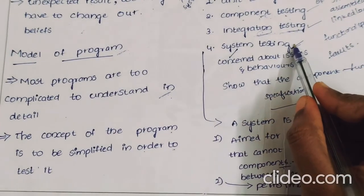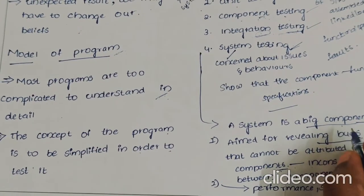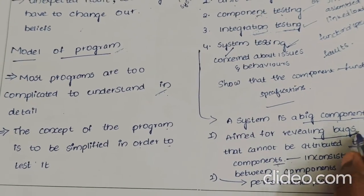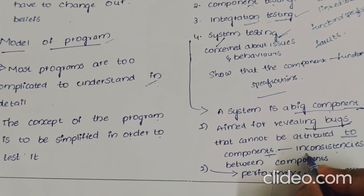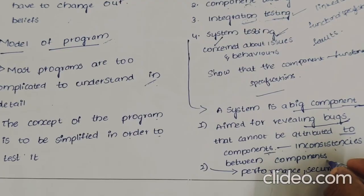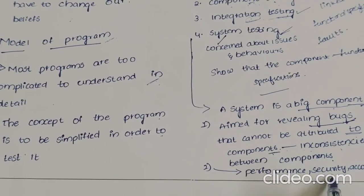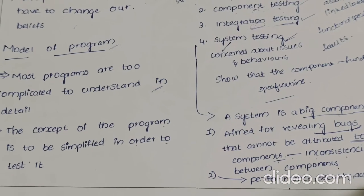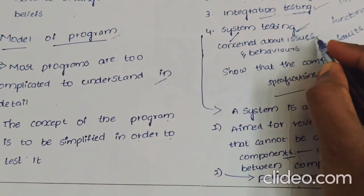System testing is the final testing. It is a big-scope test aimed at revealing bugs that cannot be attributed to individual components, such as inconsistencies between components. System testing includes performance, security, and accountability testing, and is concerned with overall system issues and behavior.